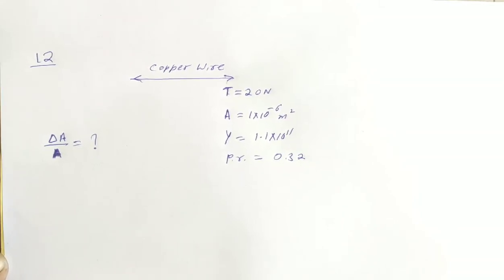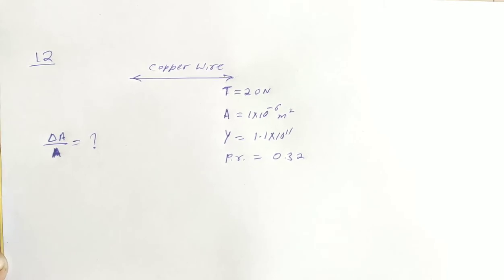HcVama Solutions Chapter 14 Question Number 12. A copper wire of cross sectional area 0.01 cm² is under a tension of 20 N. Find the decrease in the cross sectional area. Young modulus of copper is 1.1 into 10 to the power 11 and Poisson ratio is equal to 0.32.